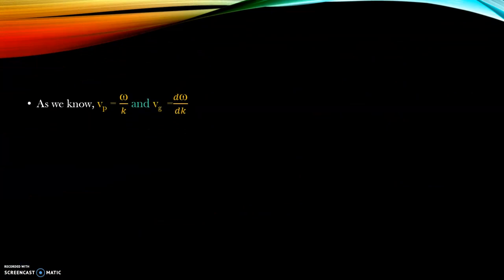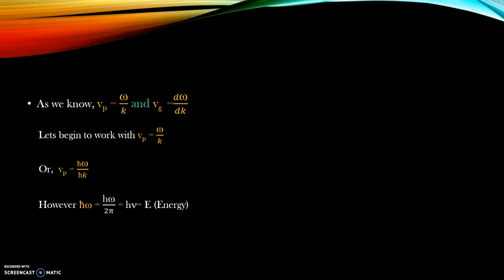As we have already talked, vp is equal to omega by k and vg is equal to d omega dk. Now let us do a little bit of mathematics. We will begin with the first expression of phase velocity which is equal to omega by k. What we have done in this step is we have multiplied the numerator as well as denominator with h-cut, where h-cut is h by 2pi.